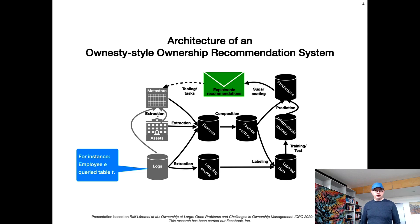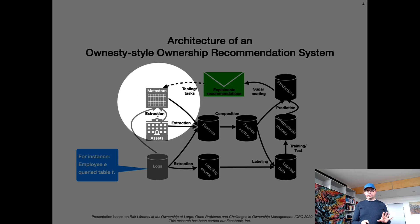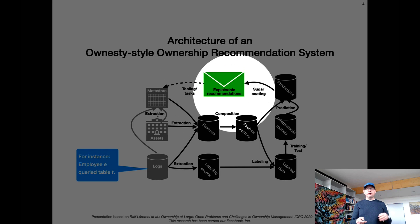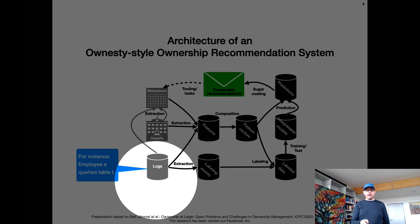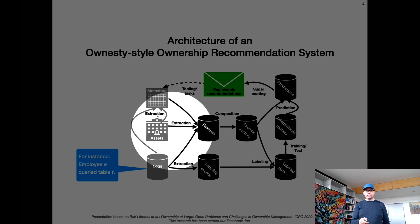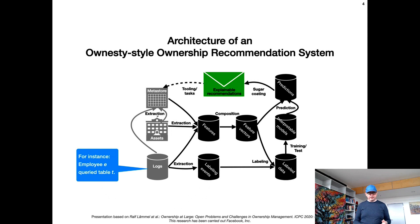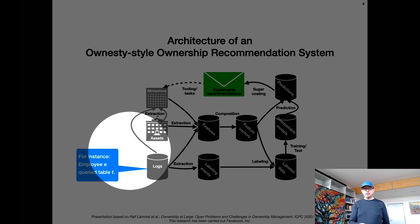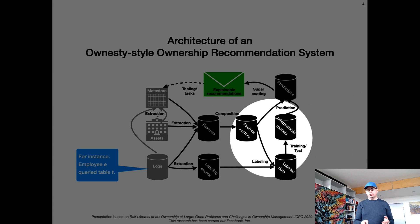Let me walk you through this architecture. What we really want is a metadata store with ownership information that is always up to date and always has the best owners. We generate recommendations that help developers or engineers use tooling or project management to actually change ownership. The idea is that we extract features both from the assets themselves — such as source code files or database tables — and also from the logs of how we use all the systems, including version control. From those things, we extract features and build feature vectors that eventually go into a machine learning system.